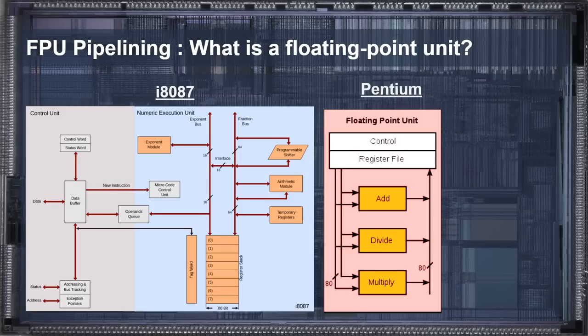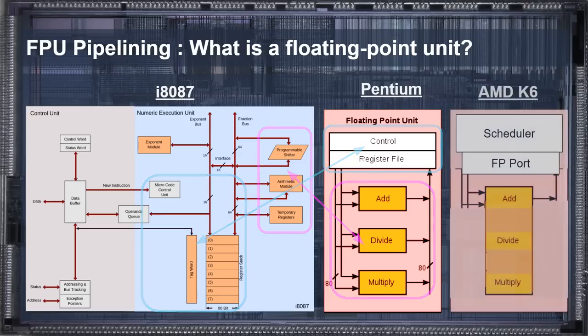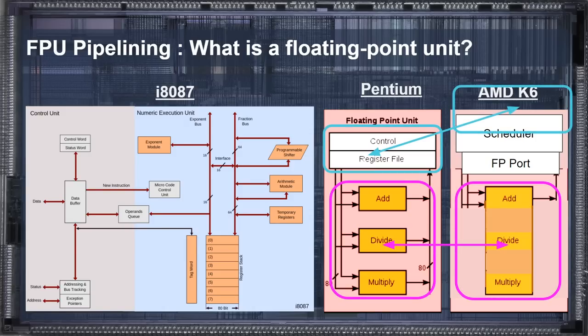We can compare this to the floating-point unit on the Pentium, which contains similar control circuitry and stack registers, plus a compute section that implements more complete function units so that different operations can overlap at the same time. There's no bus interface since the Pentium FPU was integrated into the CPU. In comparison, the floating-point function unit in the AMD K6 had all floating-point operations implemented in a shared execution unit. This allowed common resources to be shared, at the cost of not being able to execute operations in parallel. Additionally, the control unit and register file were moved out of the execution unit and made part of the larger processor.